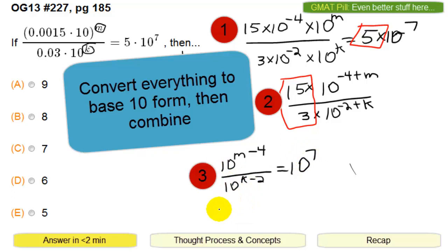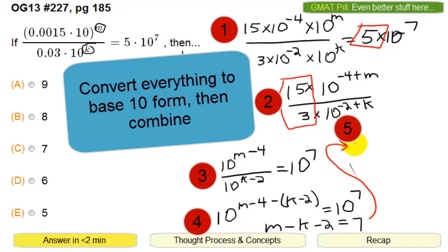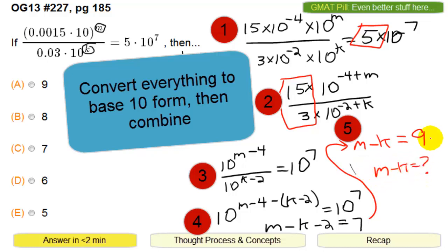When you divide with the same base, that's the same as keeping the base and subtracting the exponents. So you have m minus 4 minus the quantity k minus 2 equals 7. That's basically m minus 4 minus k plus 2 equals 7, which gives m minus k minus 2 equals 7. Adding 2 to both sides, m minus k equals 9. So the original question was what is m minus k? It turns out m minus k equals 9, and that is answer choice A.